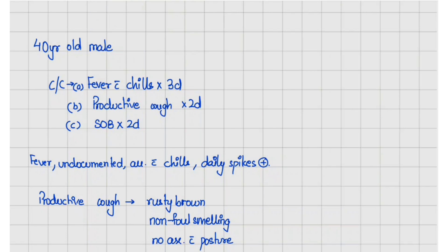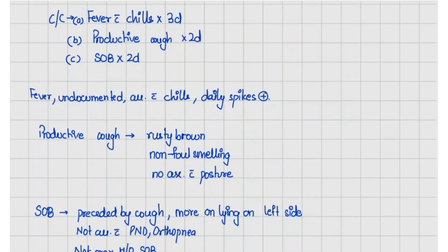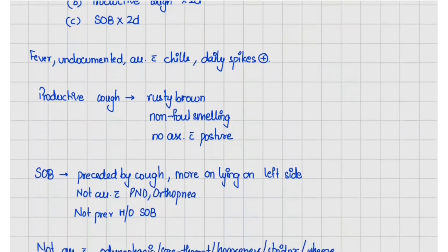The patient was apparently well three days back when he developed fever, which was undocumented and associated with chills. The patient has daily spikes of fever, relieved for some time by medication. The patient also has productive cough since two days with rusty brown color sputum.